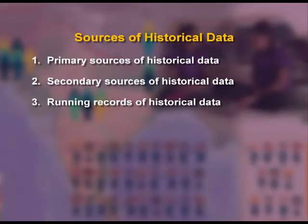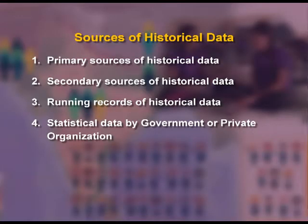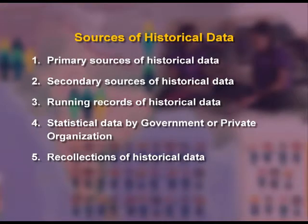Third, running records of historical data — running records are collected from concerned daily newspapers, magazines, gazettes, television, or radio news. Fourth, statistical data by government or private organizations — data can be collected from survey reports developed by different government or private organizations, census reports, etc., in accordance with the need. Fifth, recollection of historical data — recollections are the act of collecting something which was collected once upon a time by someone.